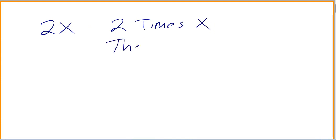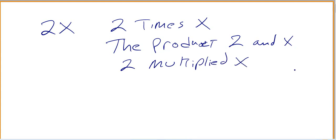Well, some ways to write this is 2 times x, or you can say the product of 2 and x, or 2 times x, product of 2 and x, 2 multiplied by x.